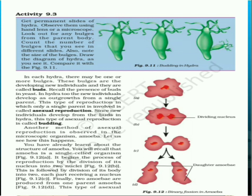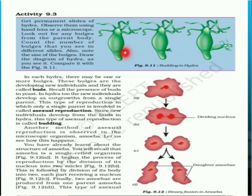Hydra is a water animal. You can see a bud-like structure coming out from the side of the hydra. This bud grows in size and becomes a new individual, then gets detached from the mother's body and grows independently. The outgrowth is called a bud, and this process is called budding. This is an example of asexual reproduction.